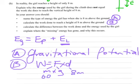60 times by 10 times by 8, which will equal 4,800. And the units will work as energy converted, which is joules.